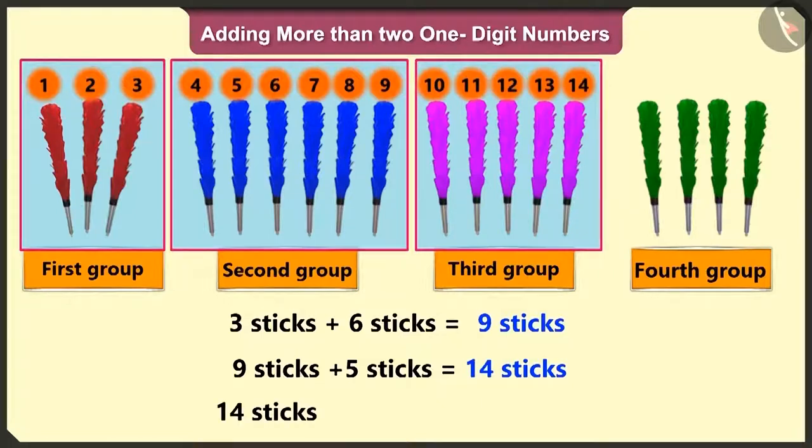To add fourteen to four more sticks, count after fourteen is fifteen, sixteen, seventeen and eighteen. The magician has a total of eighteen sticks.